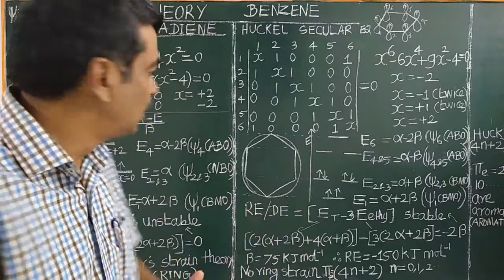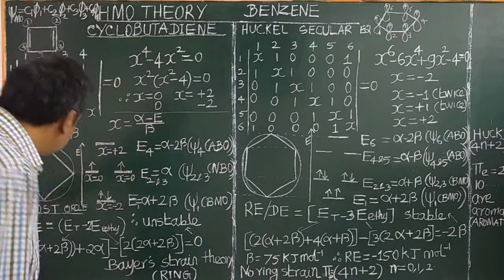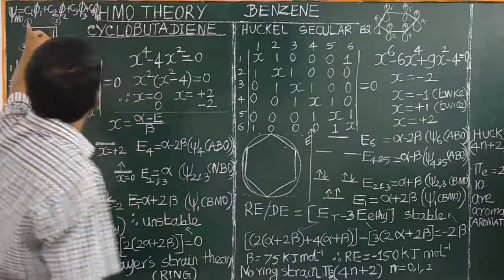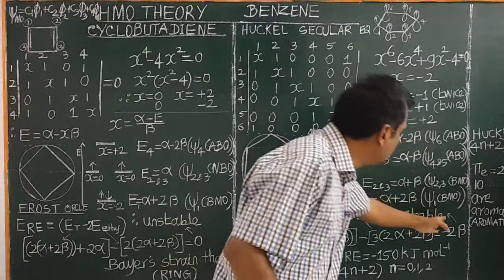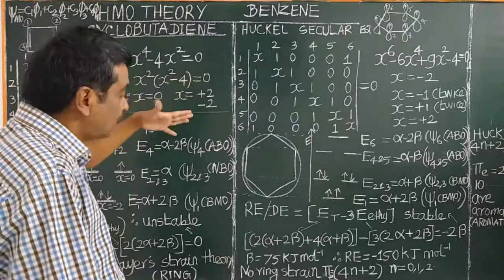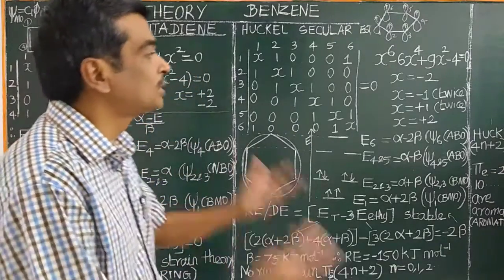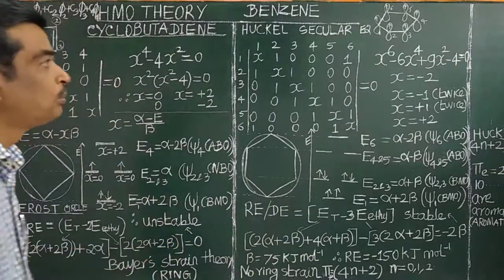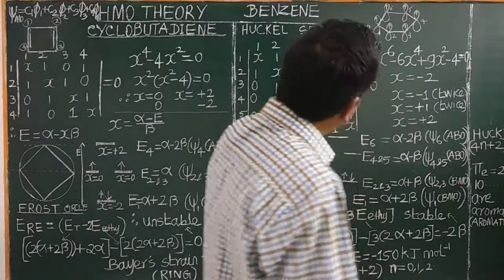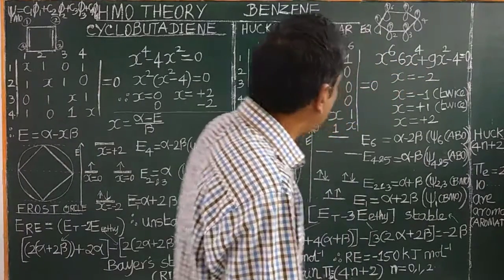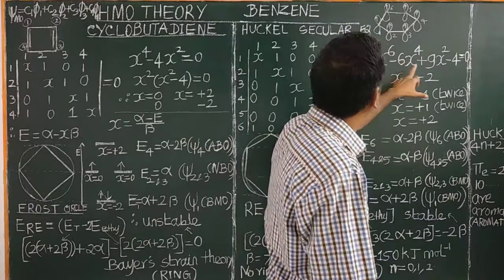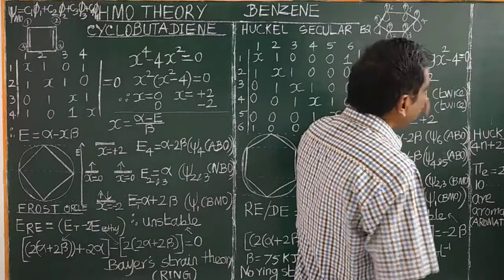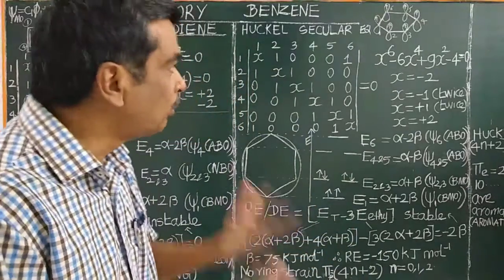You can write a computer program to calculate the energy levels, energy values, delocalization energy, and atomic orbital coefficients. All molecular orbital wave functions can be calculated using computer programs — writing this kind of program to determine energy levels is very useful.